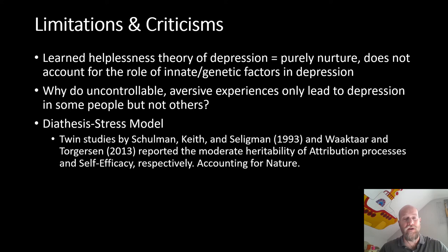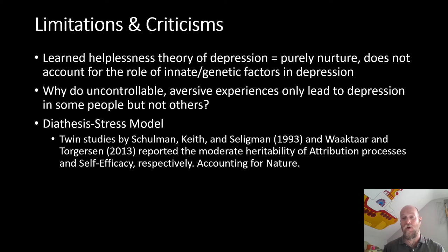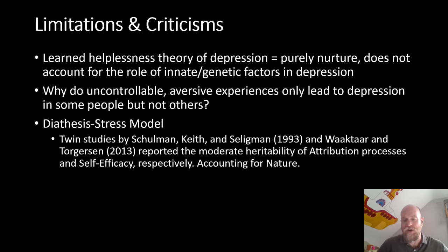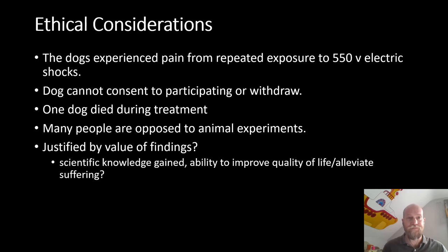The solution commonly seen in nature-versus-nurture discussions is the diathesis-stress model, which says most psychological conditions are a result of both nature and nurture. The diathesis is your biological predisposition — genetics inherited from family members with histories of depression, bipolar disorder, schizophrenia, or other conditions — creating a vulnerability. Under sufficient environmental stress — emotional, physical, or psychological — that vulnerability becomes activated and expresses itself. Twin studies can help control for genetic factors and examine processes like attribution and self-efficacy.